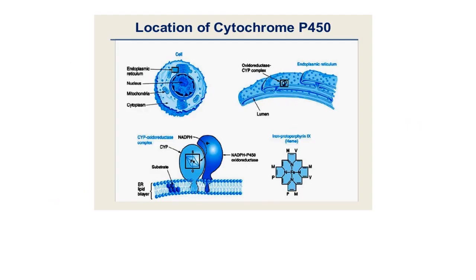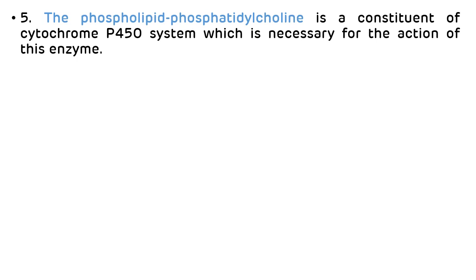This is the picture showing the location of cytochrome P450. The main location is the microsomes of the liver. It is also present in the mitochondria of the adrenal gland and in the endoplasmic reticulum. It contains heme as a prosthetic group — this is the structure of heme. The main phospholipid present in cytochrome P450 is phosphatidylcholine, which is necessary for the action of this enzyme.